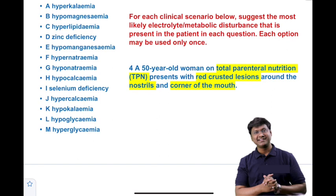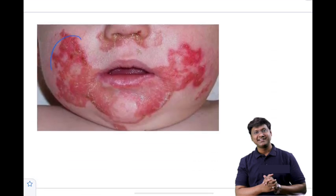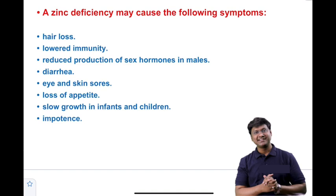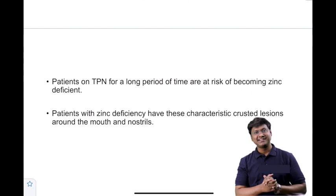The fourth clinical scenario is a 50-year-old woman on total parenteral nutrition presenting with red crusted lesions around the nostrils and corners of the mouth. Prolonged total parenteral nutrition predisposes to zinc deficiency. Other features of zinc deficiency include hair loss, lowered immunity, reduced production of sex hormones causing impotency in males, diarrhea, eye and skin sores, loss of appetite, and slow growth in infants and children.